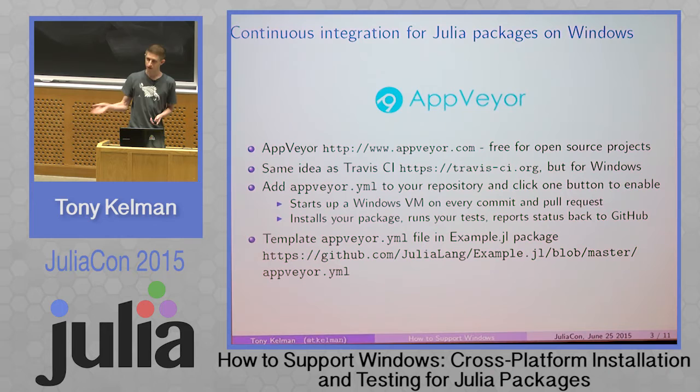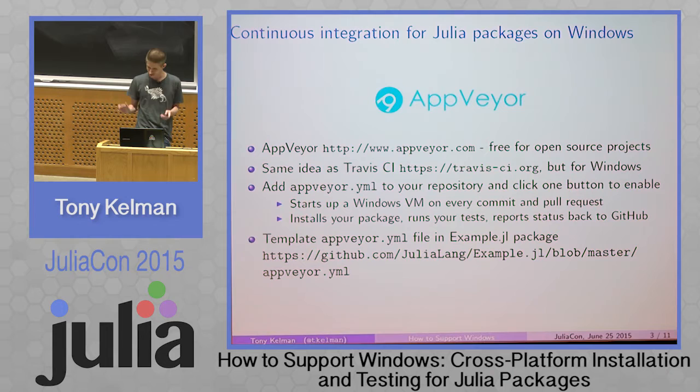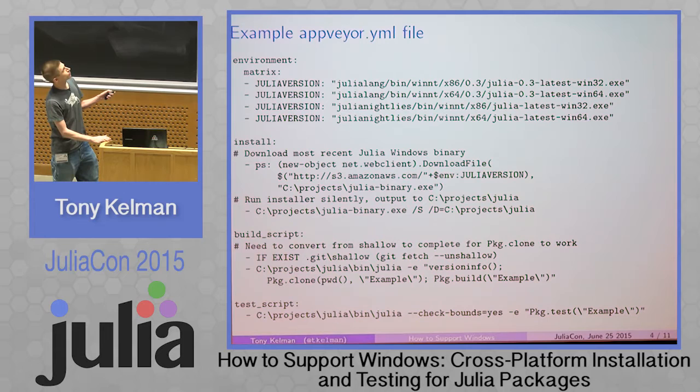You add one file to your repository and click one button on AppVeyor's website after signing up to enable it. You log in through GitHub, and it starts up a Windows virtual machine on every commit you make and every pull request you get — same as Travis. It installs your package, runs your tests, and reports the status back to GitHub, telling you whether it works on a system you've never tried before. If it doesn't work, you need help, and you're welcome to ping me. example.jl now has this file.